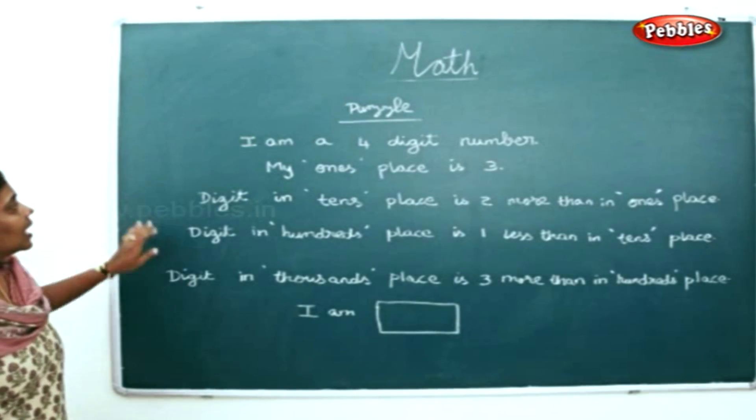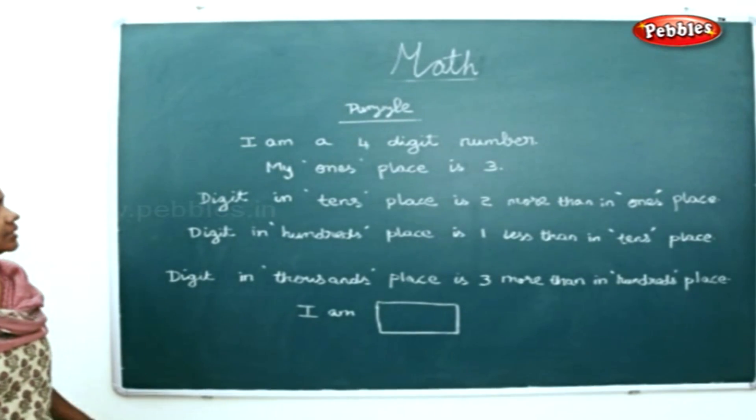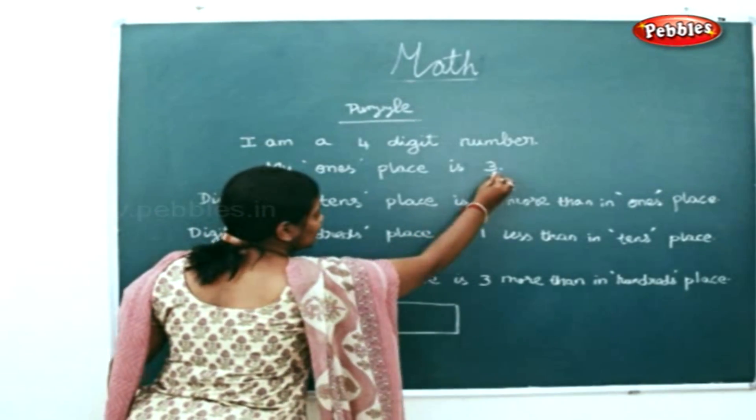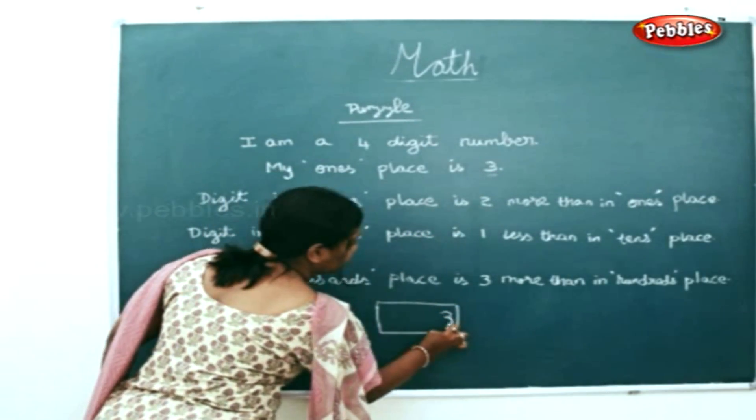Now we'll read the following puzzle. I'm a four digit number. My ones place is three. So what do you have in the ones place? Three.